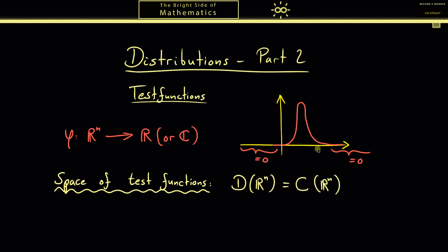Of course we want more and as you can see in the graph, it is smooth and indeed we want the best smoothness. Hence we look at functions that are differentiable arbitrarily often and we usually denote that with the infinity symbol here.